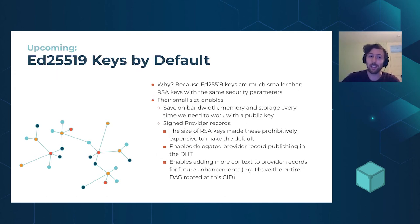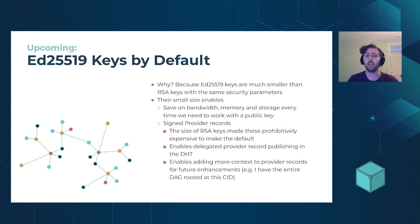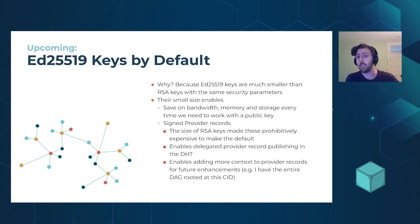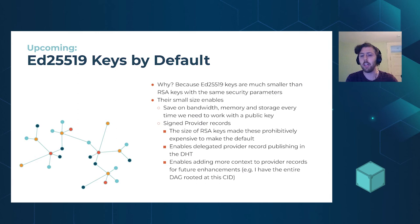Elliptic curve keys by default is great — their small size saves on bandwidth, storage, and memory. It also allows us to finally have signed provider records. When you tell peers about content, you can ask other peers to talk to the DHT on your behalf and announce that you have data. It also allows adding more context to provider records, such as indicating you have not just a CID but the entire DAG underneath it.